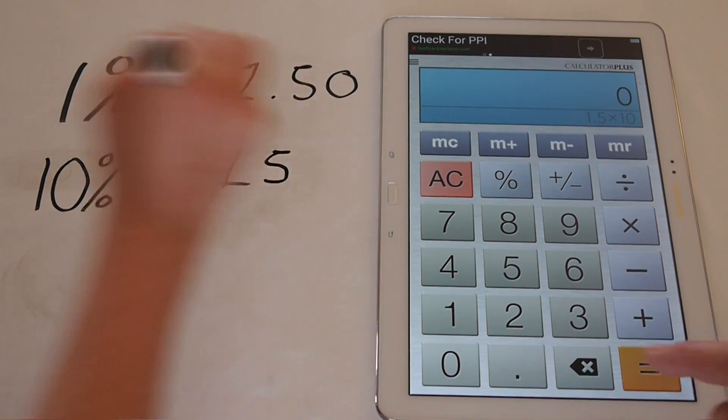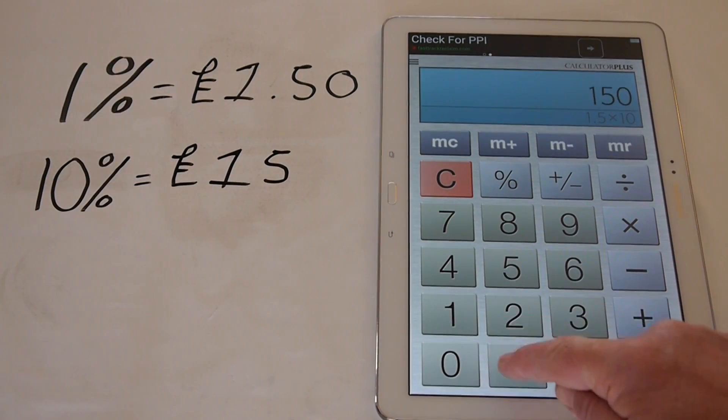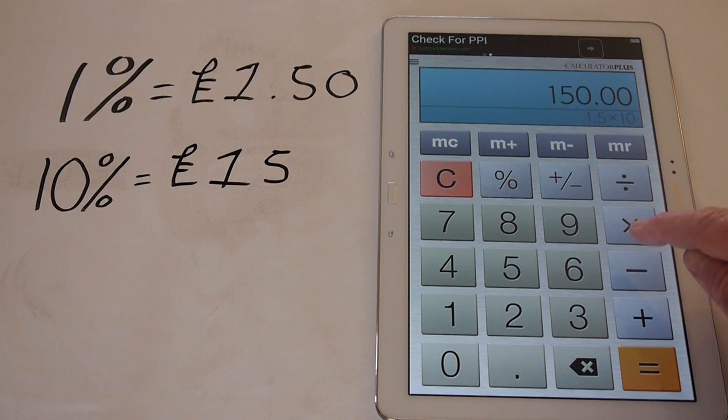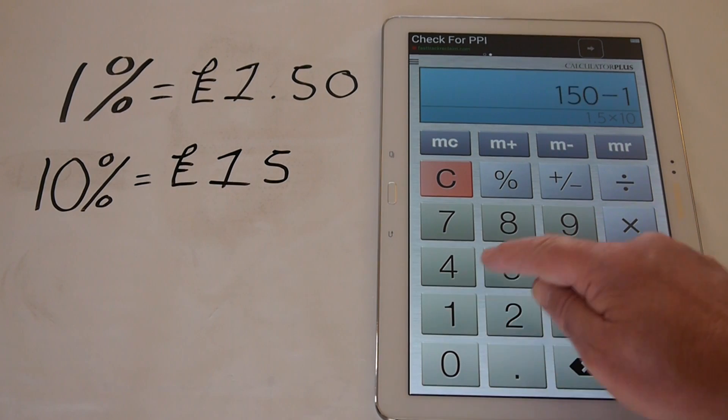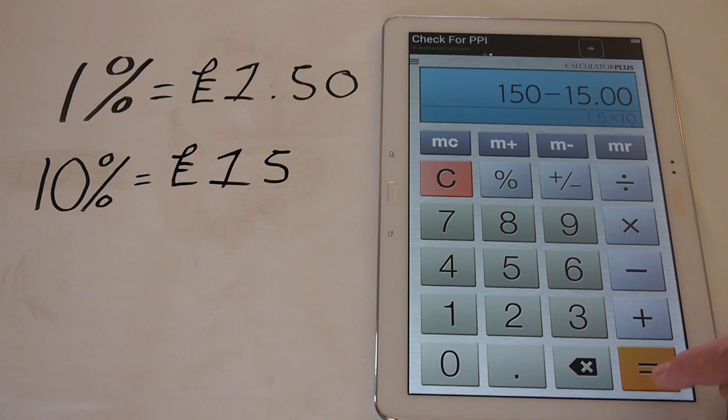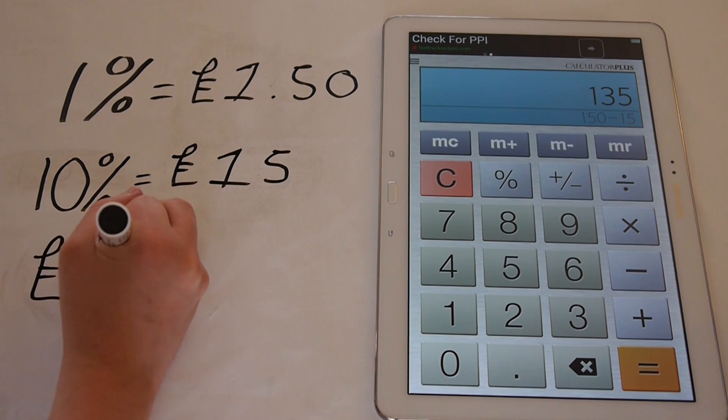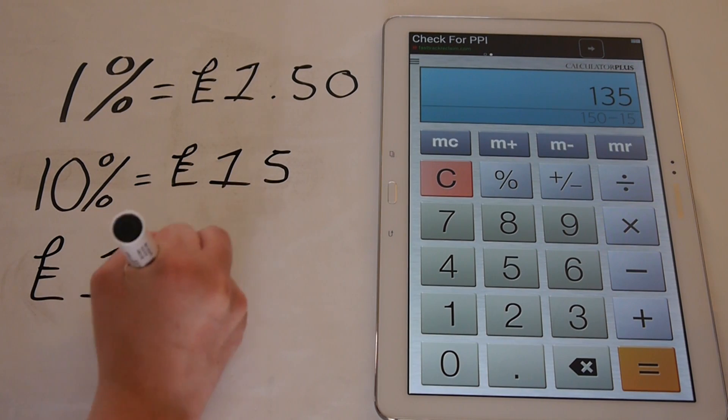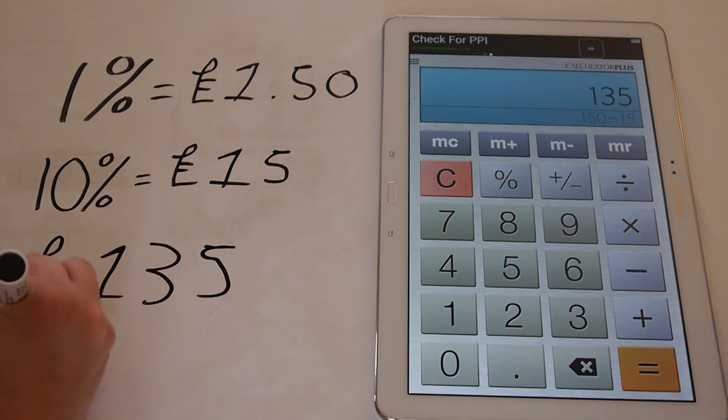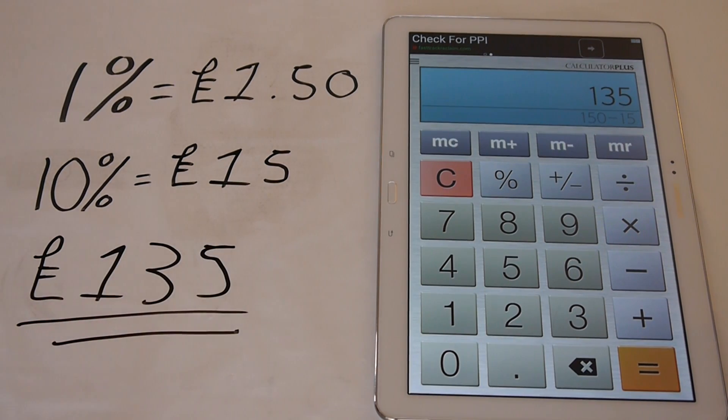So we take the original amount, the 150, minus of 10%, which is 15 pounds. And that is equal to, the answer is 135 pounds. So 150 pounds with a 10% reduction is equal to 135 pounds.